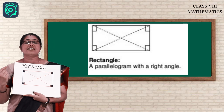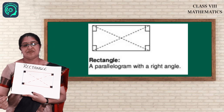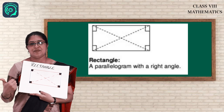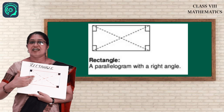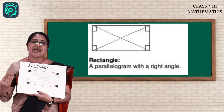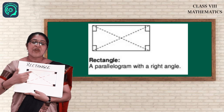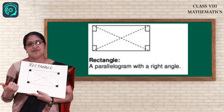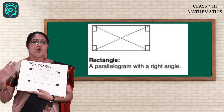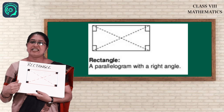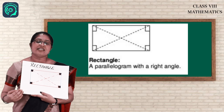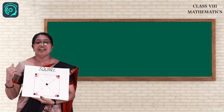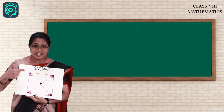For a rectangle, opposite sides are equal and opposite sides are parallel. Now what about the angles? All interior angles are 90 degrees. And the diagonals intersect and they bisect each other. Now let us see the next quadrilateral.